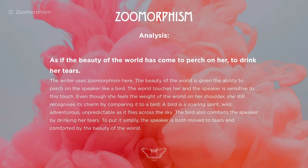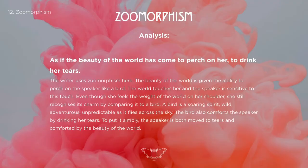There's something charming about this bird, and I start to bring in emotional, descriptive words — free associations. I think of a bird as a soaring spirit, wild, adventurous, and unpredictable — you never know which direction it'll fly. The fact that it drinks her tears is really comforting, even though it's a weight on her shoulder. Notice how I sum up all my ideas with a conclusive statement: to put it simply, the speaker is moved to tears and comforted by the beauty of the world.